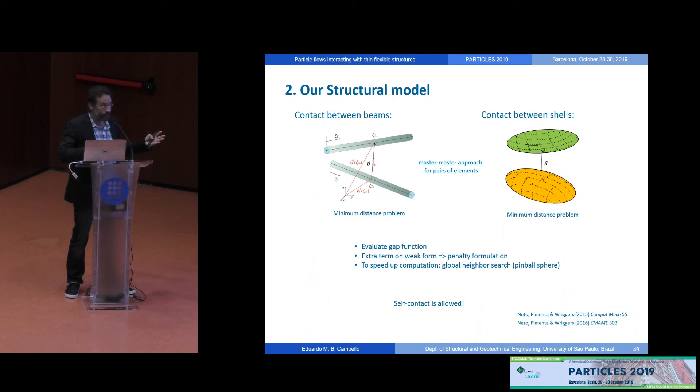This is how we deal with contact between the structural elements. I mean, beams can touch each other, shells can touch each other, also these guys can touch each other as well. We make use of a master-master approach for pairs of elements. That is to say, for each pair of elements that is candidate to contact, we follow a minimum distance problem to identify which point on each element are candidates to contact, either here or here. So once these points are identified, then we compute a gap function, we evaluate this gap function in case contact is detected, then we had to add one extra term on the weak form. This is done through a standard penalty formulation, very simple, and of course to speed up computation, we need to come up with some global search prior to this local minimum distance problem. We do that through bounding spheres. This is a work done in collaboration with colleagues of mine here, and of course self contact is allowed.